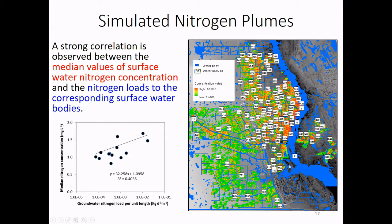We simulated the concentration plumes of nitrate. One interesting result: we had surface water quality data showing nitrogen concentrations at surface water monitoring stations, and we also estimated the corresponding groundwater nitrogen loads. We compared the estimated groundwater load with the median nitrogen concentration in surface water across the 14 monitoring stations, and found a very strong correlation. This means the high nitrogen concentration in surface water may be attributed to the groundwater nitrogen load.